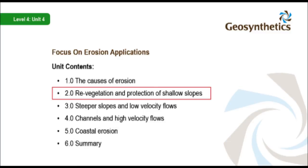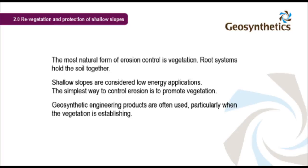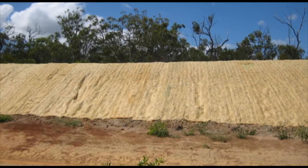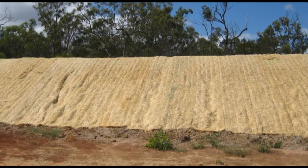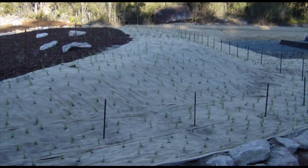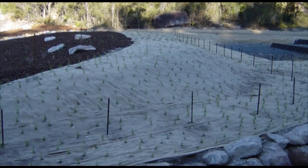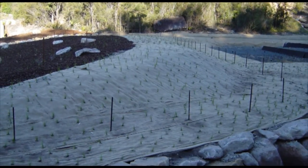The lowest energy and most common application is revegetation and shallow slope protection. The most natural form of erosion control is vegetation — root systems hold the soil together. Shallow slopes are considered low energy applications. The simplest way to control erosion is to promote vegetation. Geosynthetic engineering products are often used, particularly when the vegetation is establishing. Placing a biodegradable cover on a slope will help minimise the loss of topsoil from water running down. Biodegradable covers also promote the growth of vegetation and can create a more conducive microclimate beneath the cover. Juvenile plants can be sown through the biodegradable textile.